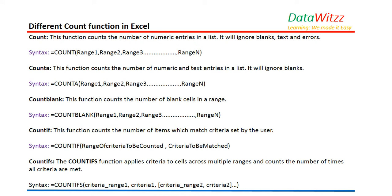For COUNTIF the syntax is different: COUNTIF(range, criteria). The last one is COUNTIFS, which was introduced in Excel 2007 onwards. With COUNTIFS we can count entries matching multiple conditions across multiple ranges. The syntax shows: COUNTIFS(criteria_range1, criteria1, criteria_range2, criteria2, ...) and so on.